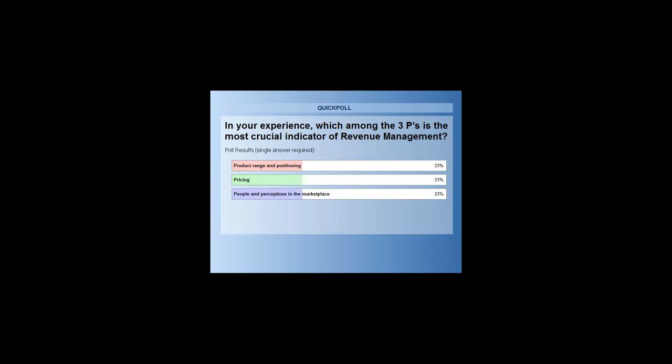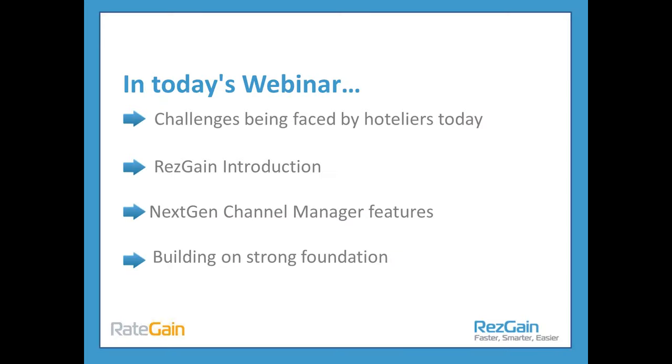A pretty even split straight down the middle — 30, 30, 30%. We've never had a result like that before. So it is a bit of everything in revenue management — it's about getting the complete picture. As we walk through today, we're going to talk about some ideas for product range positioning, pricing to a certain extent, and also perceptions — how people perceive the rates they're seeing and what you can do about that.